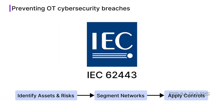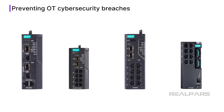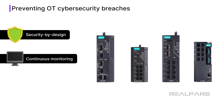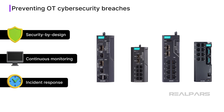So how can industrial organizations stop these types of attacks? The first step is adopting a structured cybersecurity framework, and IEC 62443 is among the most widely recognized. It guides organizations through a lifecycle approach, from identifying assets and risks to segmenting networks into protected zones and applying controls based on threat levels. Leading network device providers, such as Moxa, are committed to providing reliable and secure networking devices and following a comprehensive approach to cybersecurity, including implementing rigorous security by design principles, continuous monitoring of vulnerabilities, and prompt incident response protocols to support customers in building resilient OT networks.